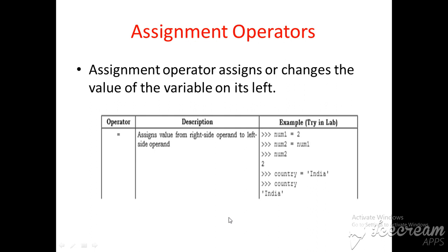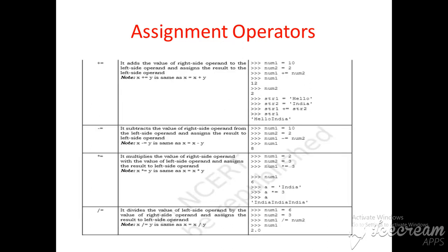The next type of operator is called the assignment operator. The assignment operator assigns or changes the values of the variable on the left side. The first assignment operator is equal to. Here, num1 is equal to 2 and num2 is equal to num1, which means 2 is assigned to num2, so after printing num2 we get 2. Similarly, country is equal to india, then we print country and get india. So equal to is used to assign the value on the right side to the left side variable.